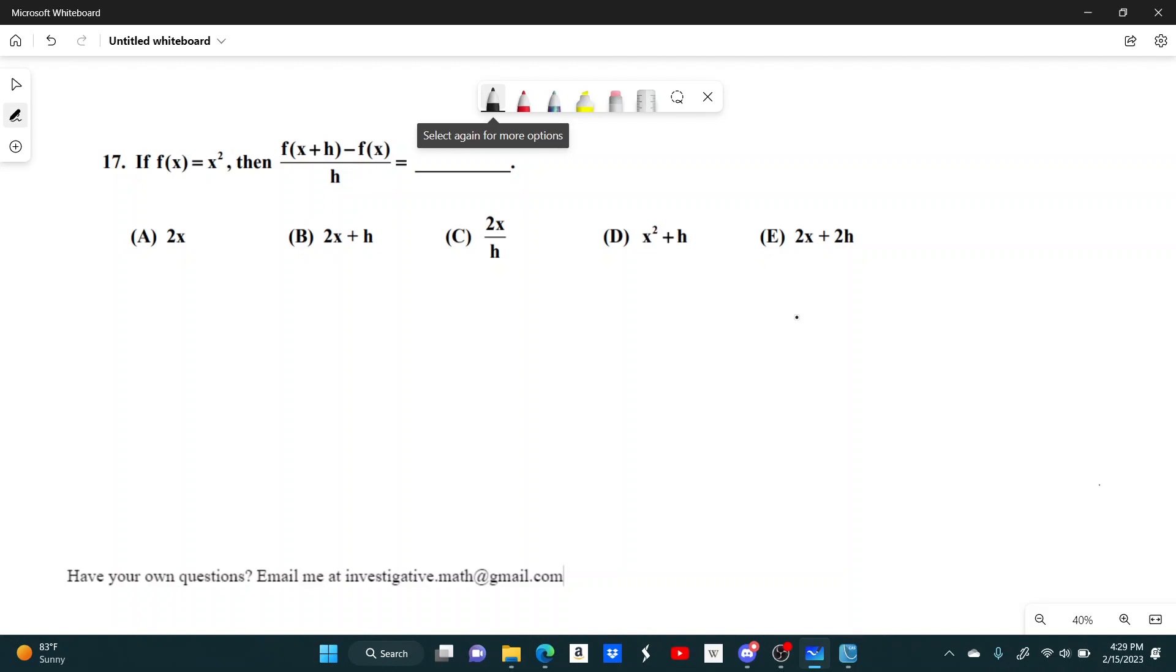This is just some basic function notation. If f of x equals x squared, then f of x plus h is just going to be, you just plug in x plus h for x and then evaluate the function. So f of x plus h will be x plus h squared, and then minus f of x, so that's just minus x squared, and then all divided by h.